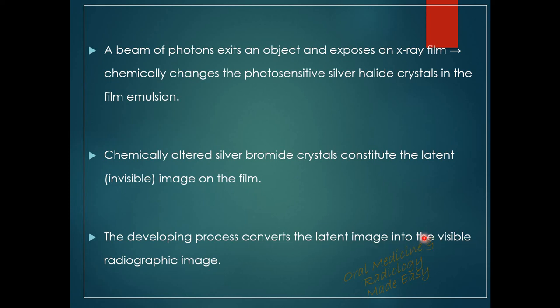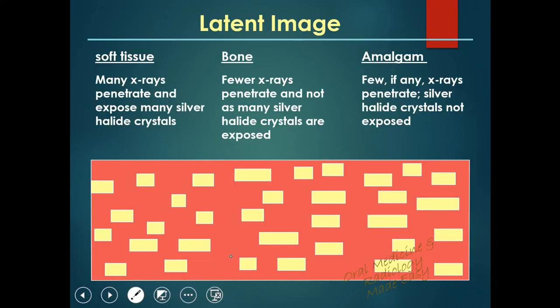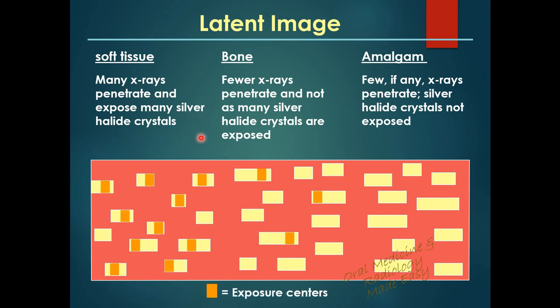Chemically altered silver bromide crystals constitute the invisible or latent image on the film, and the developing process converts the latent image into a visible radiographic image. The film consists of numerous such crystals containing latent images. Soft tissue allows most x-rays to pass through, exposing most silver halide crystals, whereas bone allows only fewer x-rays to penetrate, exposing fewer crystals. Amalgam does not allow x-rays to penetrate, so no latent image is formed behind it. This concludes the presentation on latent image formation.